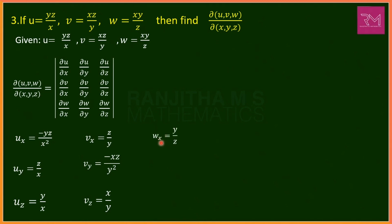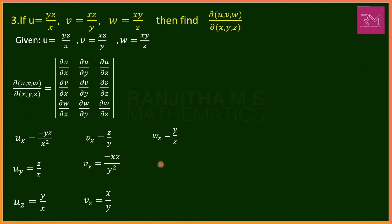For w = xy/z: del w/del x = wx = y/z. del w/del y = wy = x/z. Treating x and y as constant, del w/del z = wz = xy · (−1/z²) = −xy/z².